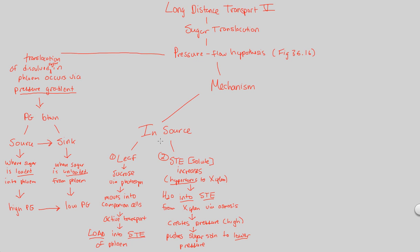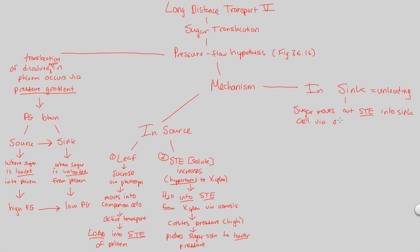That lower pressure is not at the source but at the sink. The sink is the point at which we have lots of unloading. Here, the sugar moves out of the sieve tube element (STE) into the sink cell — whatever that sink cell may be, most likely a root, because that's where a lot of storage happens. Sinks are for storage and metabolism. Sugar moves out of the sieve tube element into the sink cell via active transport.